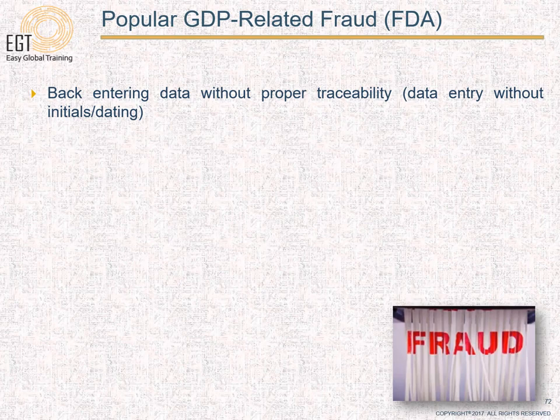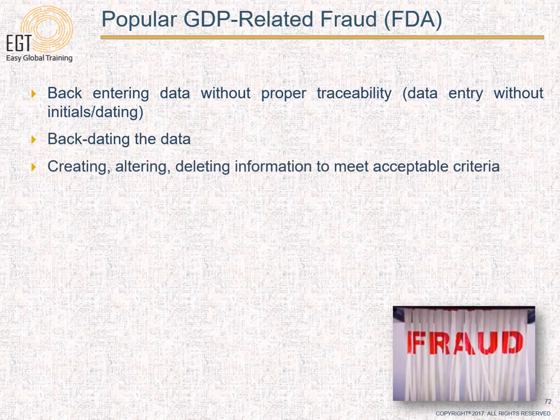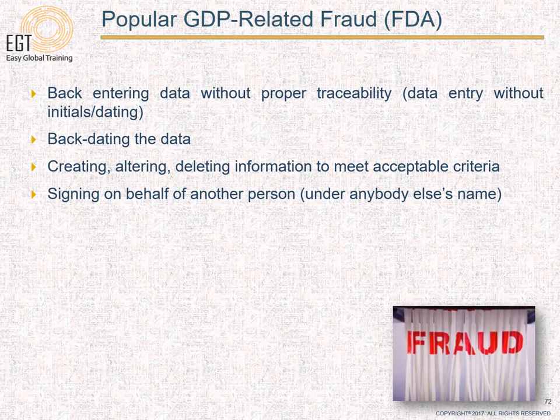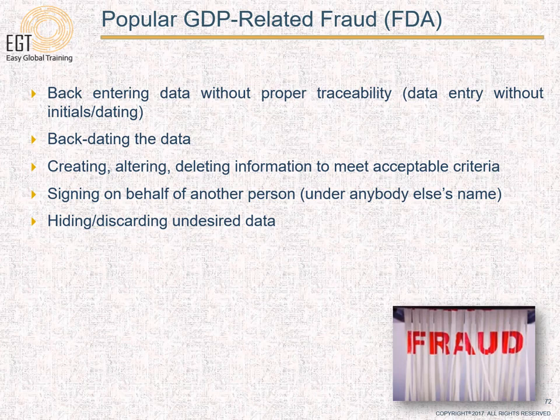The most popular GDP-related non-compliances considered to be fraud by regulatory agencies include: back-entering data without proper traceability — meaning data entry without initials or dating; creating, altering, or deleting information for the purpose of meeting acceptable criteria; signing on behalf of another person under someone else's name; and hiding or discarding undesired data. You cannot selectively show data — you must capture and show everything to regulatory bodies during audits. These situations are still happening in the US and internationally, and if caught by regulatory agencies, are considered fraud with penalties involved.